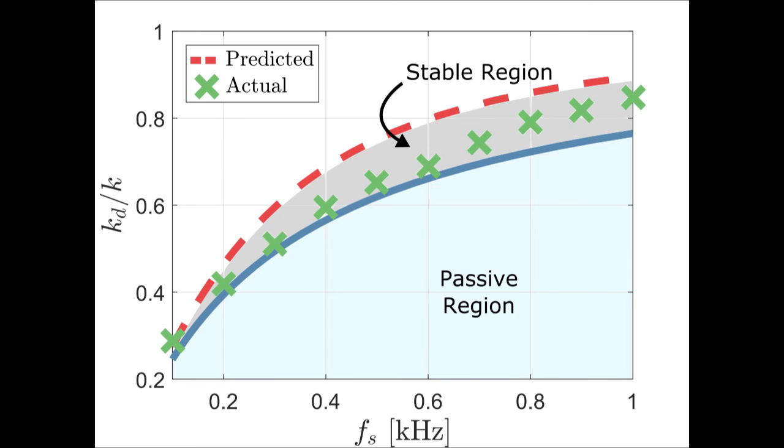We systematically found the maximum virtual stiffness that could be rendered at various sampling rates by repeating these experiments. Our results are plotted here as the green x's. Notice that the independent axis is the sampling frequency, while the dependent axis is the normalized virtual stiffness. By comparing our experimental results to the upper bound of the passivity region, we found that the derived k-width bound has less than an 8% average error across 10 different sampling frequencies.